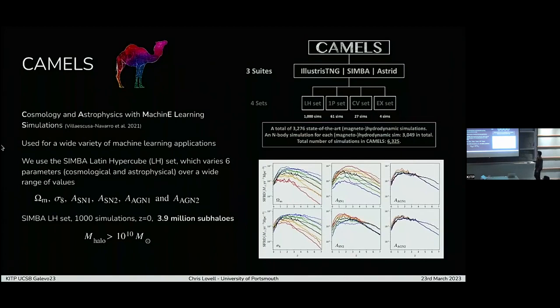Paco's already talked a lot about CAMELS and given a fantastic introduction. Just to the details that are relevant, we use the LH set from SIMBA. We're only looking at SIMBA here, keep things simple. We're looking at all of these parameters, the cosmological parameters, omega M and sigma-8 and the supernova and AGN parameters. And we're just looking at redshift zero. So this is 3.9 million subhalos in this snapshot with subhalo masses above 10 to the 10 M solar.